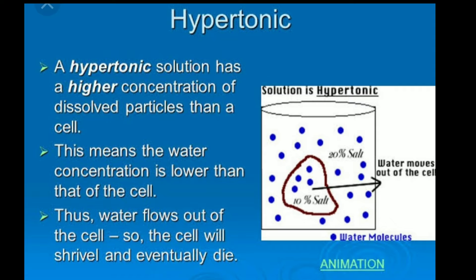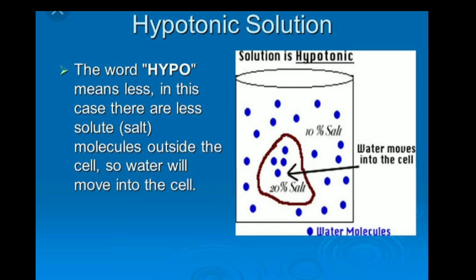A hypertonic solution has a higher concentration of dissolved particles than the cell. For example, if the cell has 10% salt concentration and outside it is 20%, water from the cell will move out, as the water concentration is lower inside than outside. Water flows out of the cell, so the cell will shrivel and eventually die.